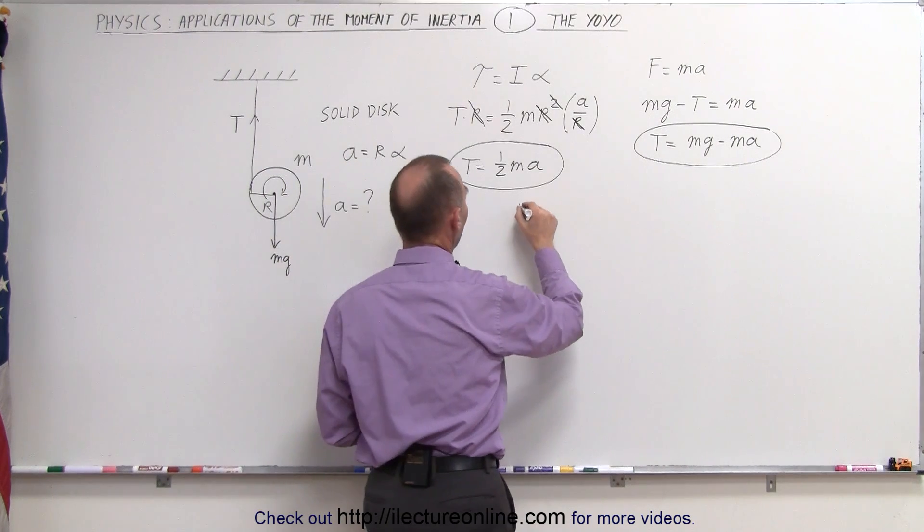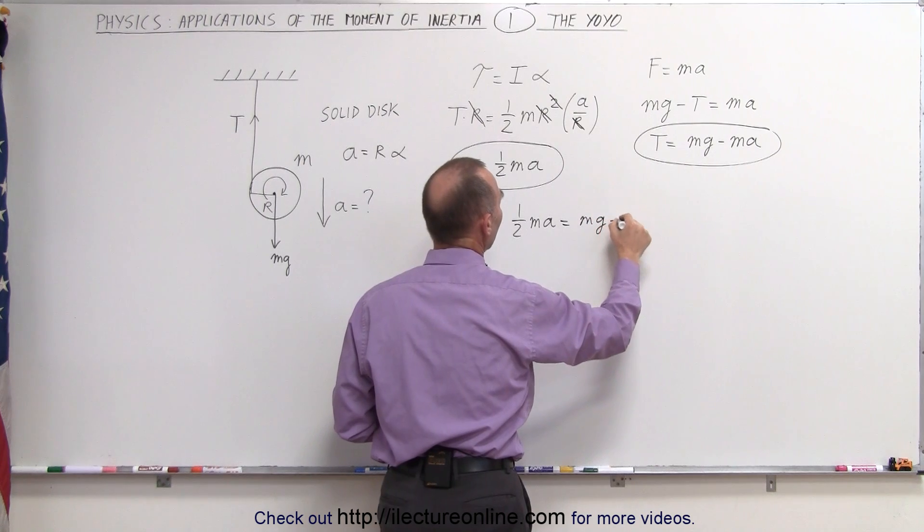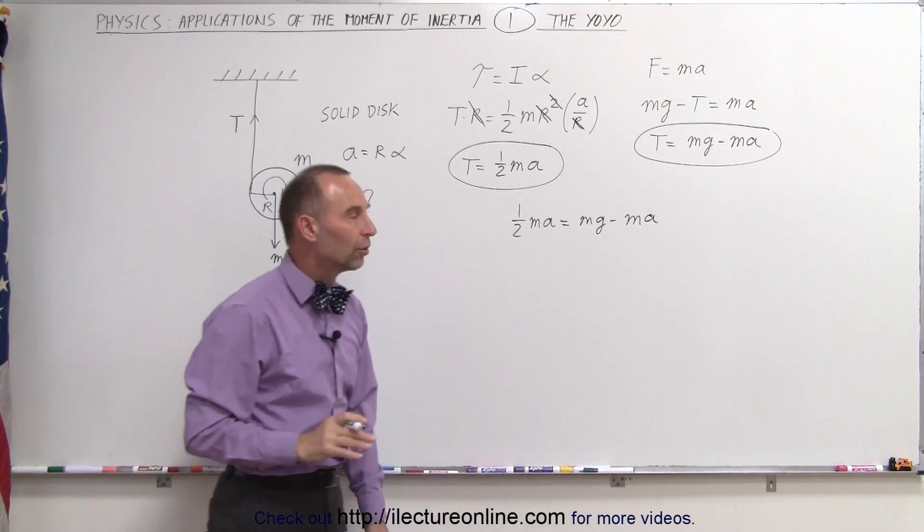We can then say that one half mass times acceleration must equal Mg minus MA and all we have to do is solve this equation for the acceleration.